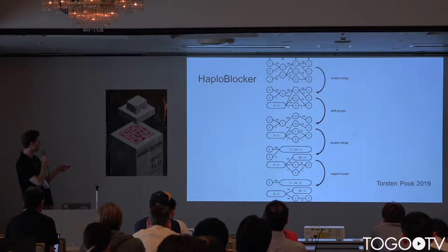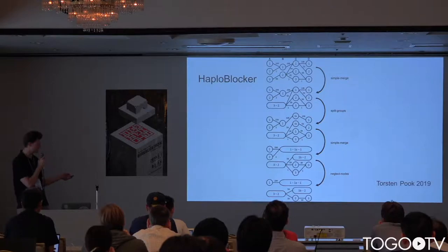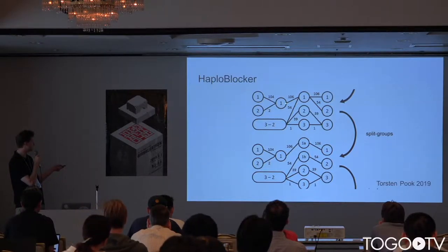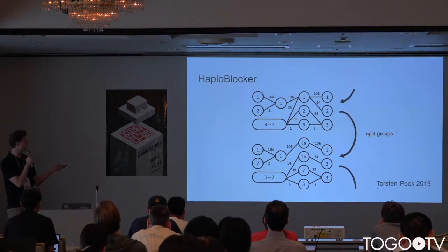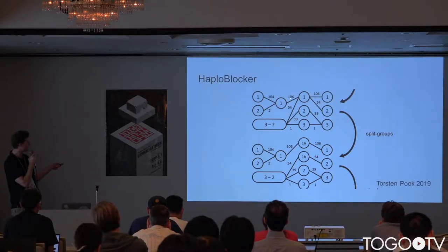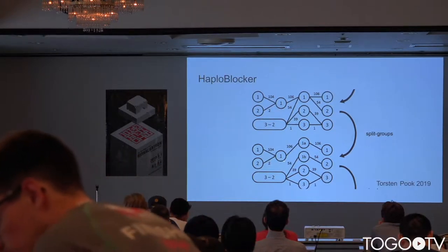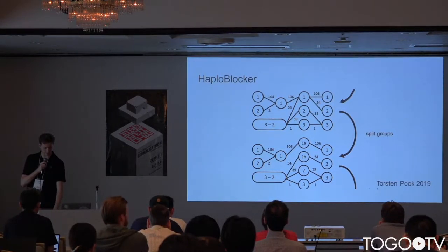The first operation that's easy is: nodes three and two here all go from one to two, so we can just merge those together into a single node. The one that's more interesting is called split groups, which I was just coding. It's where you have an irritating anchor node — like what we saw in our real data — with 106 coming out and 106 going in, causing bundling. If you split those into one-A and one-B, then the whole section can be merged together because you've split out that anchor.